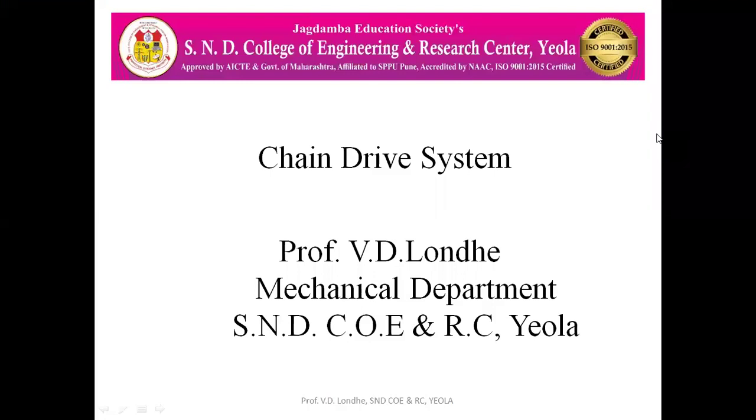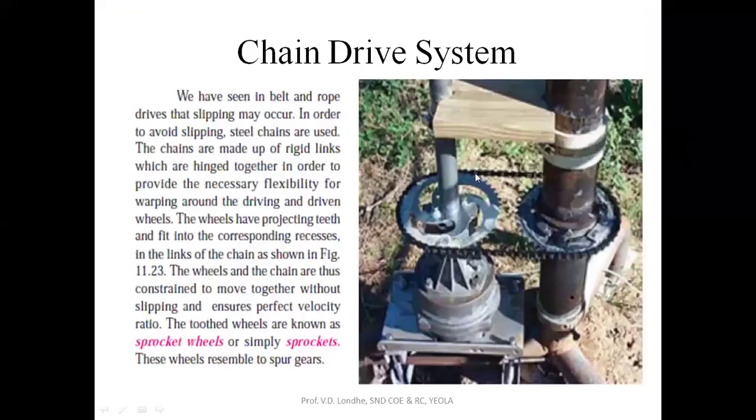Hello everyone, today we are going to see the chain drive system. Chain drive system is what we have seen in belt and rope drives where slipping mainly occurs. In order to avoid the slipping phenomena, we will be using chains.